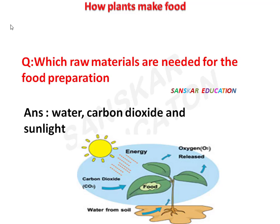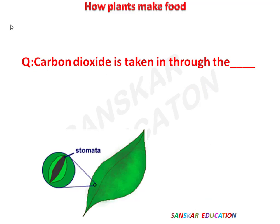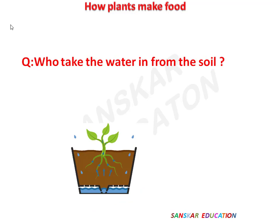Which raw materials are needed for food preparation? Water, carbon dioxide, and sunlight. Carbon dioxide is taken in through the stomata. Who takes water in from the soil? Answer is: roots.